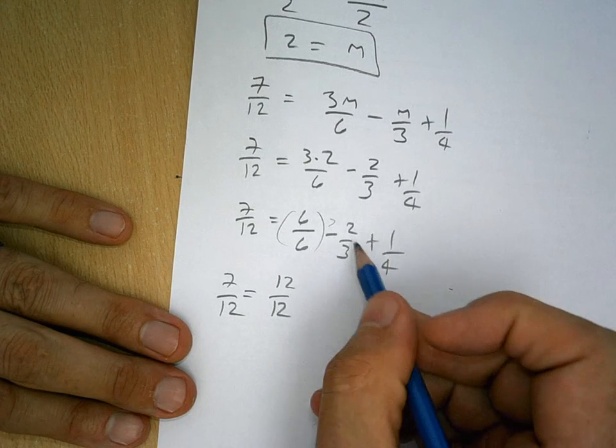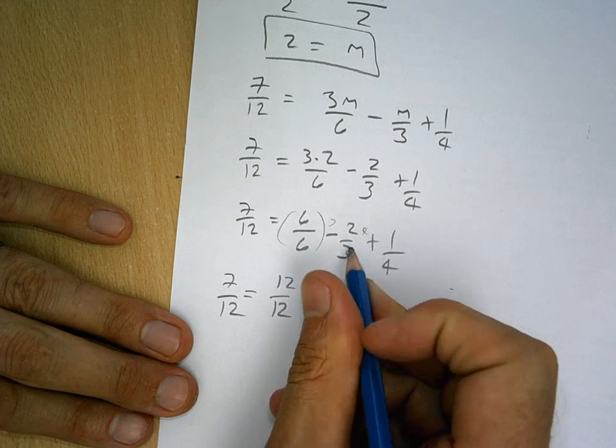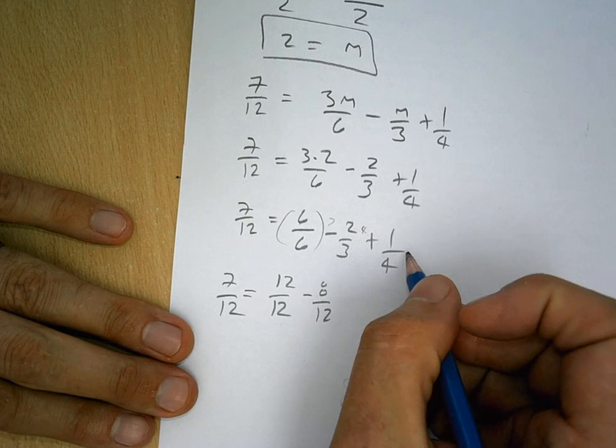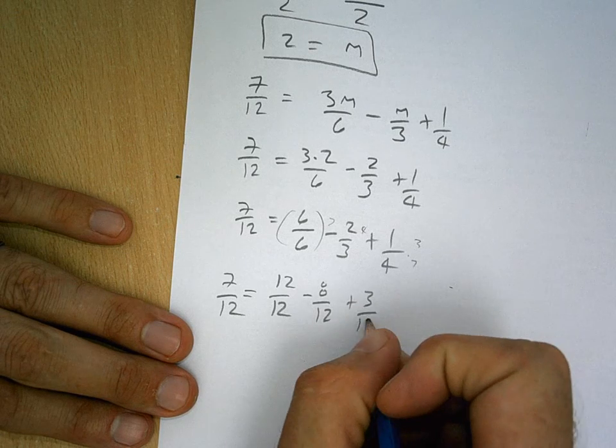And I'm going to multiply the top and the bottom here by 4, giving me minus 8/12s because 8/12s is an equivalent fraction to 2/3. And then multiply here the top and bottom by 3, and I'm going to have plus 3/12.